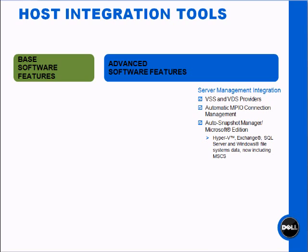Once you install the HitKit, we'll have additional integration and providers for volume shadow copy services, virtual disk services for disk management. Also, we have advanced MPIO connection management — MPIO, or multipath, is built into Windows Server, with some advanced policies installed. And then for advanced integration with snapshots and clones, we have Auto Snapshot Manager from Microsoft Edition, which includes Hyper-V, Exchange, SQL, and Windows file shares.